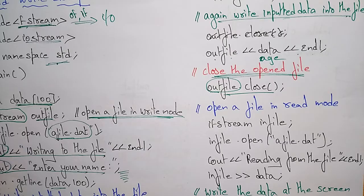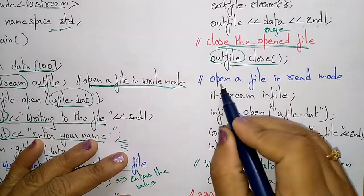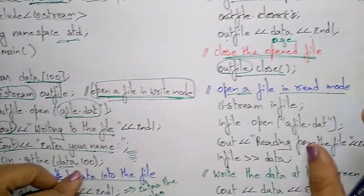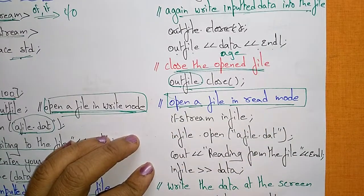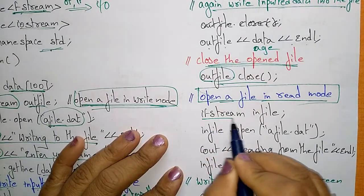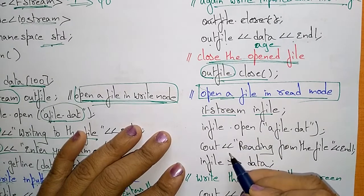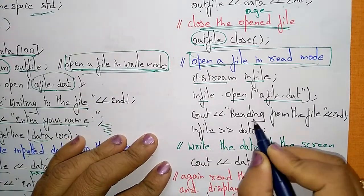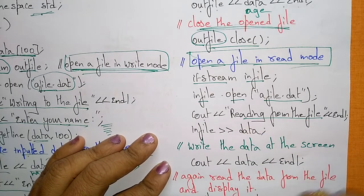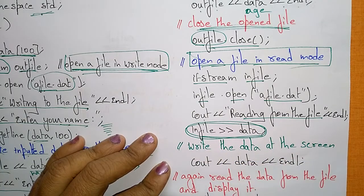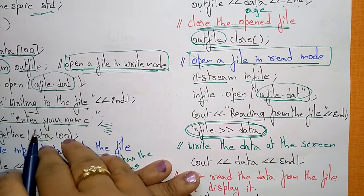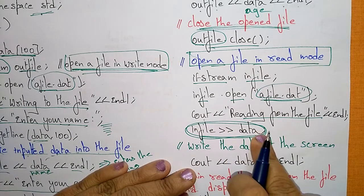Now I want to open that file again and read what data is present in it. Now open a file in read mode. Previously I opened the file in write mode and entered name and age. Now I open it in read mode. For reading I use ifstream: 'infile'. Before doing the operation, open the file: infile.open('a_file.dat'). Then print 'Reading from the file.'